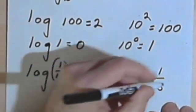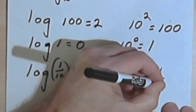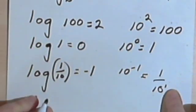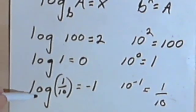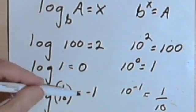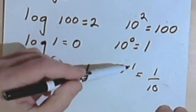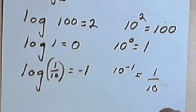Well, 10 raised to the negative 1 power is like 1 over 10 to the positive 1. And of course, I don't have to write that positive 1. So the logarithm of 1 tenth equals negative 1 is the same as 10 to the negative 1 equals 1 tenth.